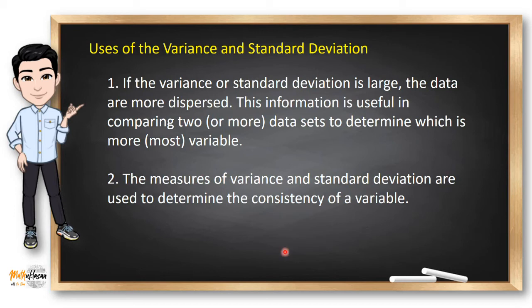The measures of variance and standard deviation are also used to determine the consistency of a variable. For example, in the manufacture of fittings such as nuts and bolts, the variation in the diameters must be small or the parts will not fit together.